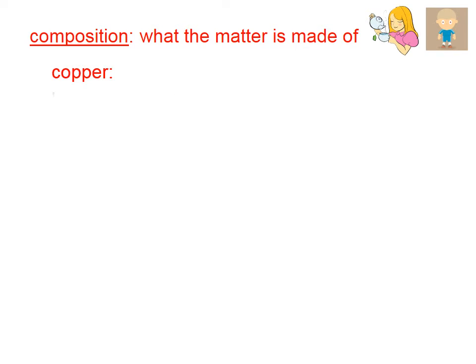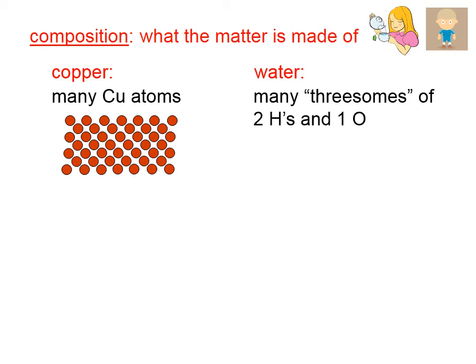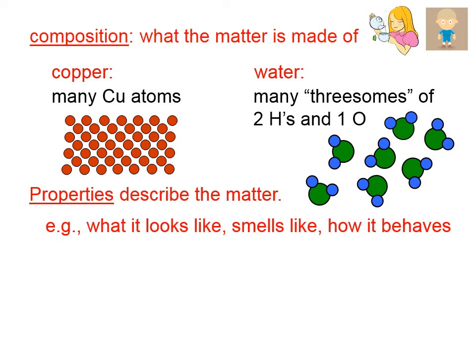In chemistry, we're concerned about the composition of samples of matter. Copper, for example, is a bunch of copper atoms — it is composed of copper atoms, and that's it. Water has a composition of hydrogen and oxygen: many groups of two hydrogens and one oxygen, like little Mickey Mouse heads where the face represents an oxygen atom and the ears represent two hydrogen atoms. So when we talk about composition, we're talking about what the matter is made of.